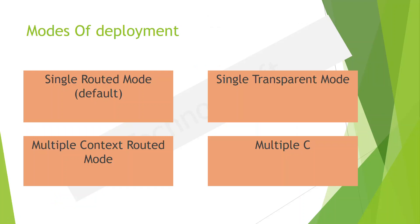So those are our modes of deployment. Depending on the situation we can choose: single routed (the default), single transparent, multiple context routed, or multiple context transparent. It just depends on the goal of the deployment.